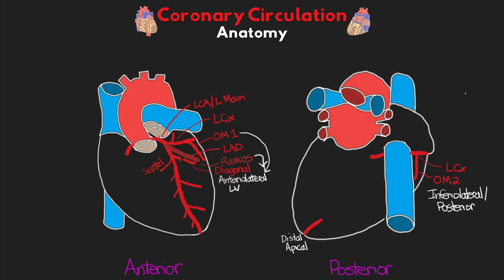Now let's move on to the right coronary artery. This one comes off the right side of the aorta and supplies the right side of the heart, including the right atrium, right ventricle, as well as our SA and AV nodes. The first branch coming off the RCA is the conus artery, which perfuses the RV outflow tract as well as portions of the anterior RV wall. Interestingly, a decent percentage of the population actually has this artery as its own branch off the aortic root. Continuing along the RCA, we have the sinoatrial nodal artery, which perfuses specifically the SA node — it comes off the RCA in about 60% of people; otherwise it comes off the left circumflex. Then we have our right atrial branch, which perfuses the right atrium.